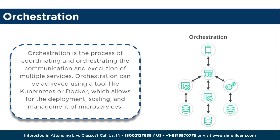Next is orchestration. Microservices orchestration involves managing the interaction and coordination between multiple microservices to accomplish a specific business process or workflow. It typically involves a central component called an orchestrator that controls the execution and sequencing of microservices. It's worth noting that the choice of interaction mechanism depends on the specific requirements and constraints of the system — some systems rely on a combination of these approaches.